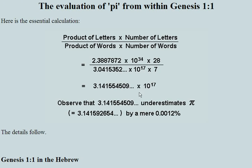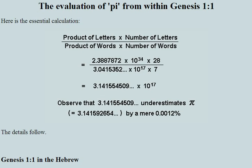We execute that formula and we get 3.14155, which underestimates pi by a mere 0.0012 percent.